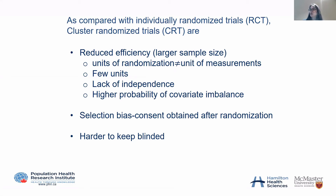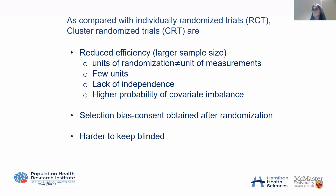There is also a higher probability of covariate imbalance because the unit of randomization is smaller than if we randomized individual patients. There can be selection bias because consent is usually obtained after randomization. Finally, the study team or physician is usually not blinded in cluster randomized trials because they need to know the assignment, though patients are typically blinded — making it harder to maintain double-blinding.